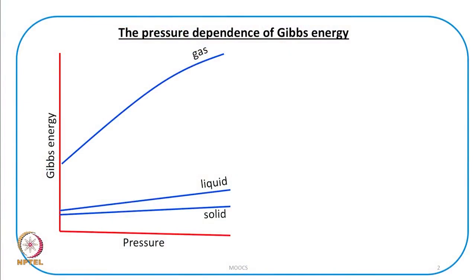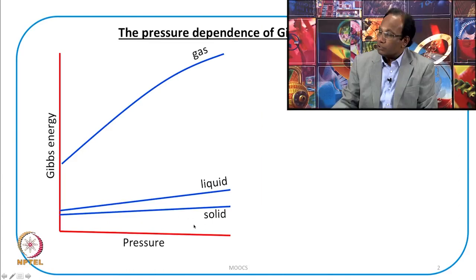Let us now discuss the pressure dependence of Gibbs energy. Just as the temperature dependence of Gibbs energy can provide a lot of information, similarly the pressure dependence of Gibbs energy can provide a lot of information. If Gibbs energy of a system is plotted against pressure, the dependence on gas is large, whereas there is not significant variation for liquid or for solid.